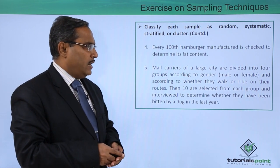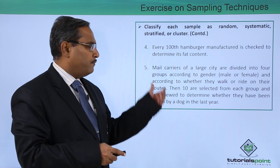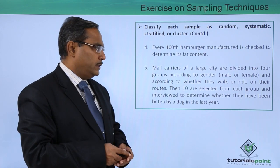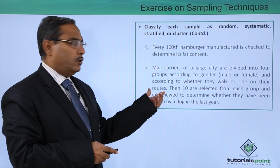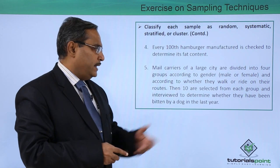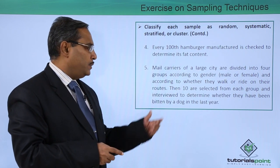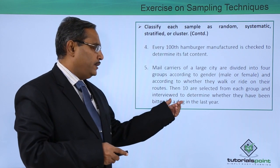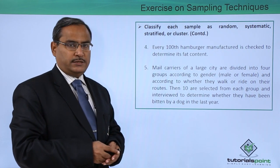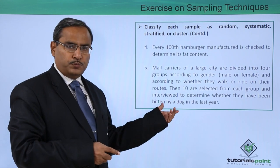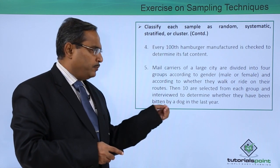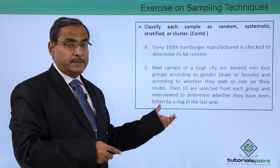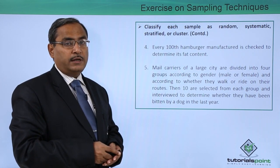Mail carriers of a large city are divided into four groups according to gender — male or female — and according to whether they walk or ride on their routes. Then ten are selected from each group and interviewed to determine whether they have been bitten by a dog in the last year. Here we have four groups and we are taking some members from each group for interviewing, so that means it is a good example of cluster sampling.